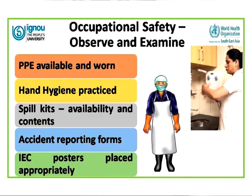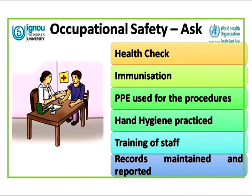Healthcare waste poses a risk to all healthcare functionaries, and occupational safety measures must be checked. We must observe whether PPE is freely available and worn while handling waste, whether hand hygiene is practiced, whether spill kits are available and their contents, whether accident reporting forms are available, and whether IEC posters are placed appropriately — for example, handwashing posters above the wash basin.